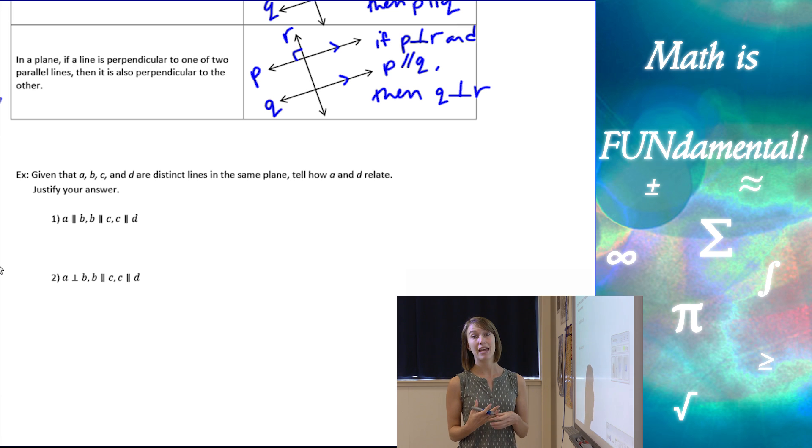So, we have four different lines, all coplanar lines. Tell how A and D relate. So, to do this, and we want to justify our answers, we want to draw a diagram. Diagrams are, you know, visualizing things in geometry is so important.